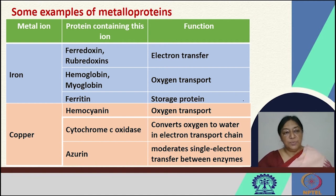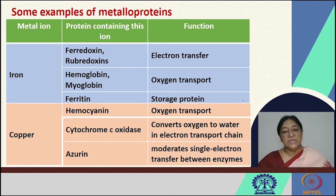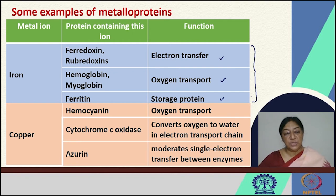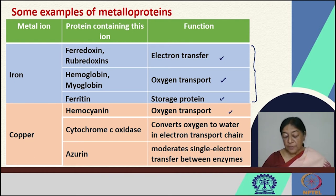These are some examples of metalloproteins showing the metal ion, the protein that contains it, and its specific function. Most of these are involved in electron transfer. For the iron type, we have hemoglobin and myoglobin for oxygen transfer, rubredoxins and ferredoxins for electron transfer, and ferritin as an important storage protein. For copper, we have hemocyanin, cytochrome C oxidase, and azurin, involved in oxygen transport and specific reactions.